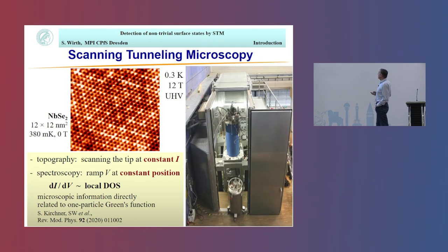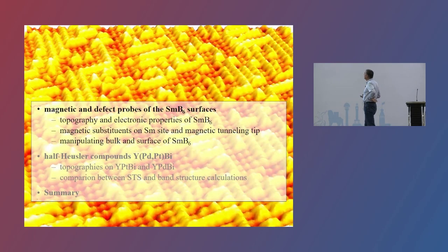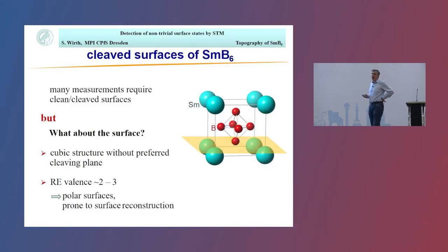This is the instrument we're mostly using: a UHV scanning tunneling microscope with base temperatures of 0.3 Kelvin and a 12 Tesla magnet inside. Now let's get started by looking at samarium hexaboride. STM is a very surface-sensitive probe, that means we need clean surfaces. What we typically do is first go into UHV and secondly cleave the samples.